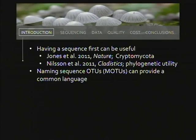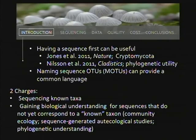Naming sequence OTUs — also in David Hibbett's lab group paper — suggested a couple of different protocols for naming environmental sequences, providing language to talk about them. So I would say we have two charges in a floristic project: one is sequencing the known taxa, and the other is gaining biological understanding for sequences that don't yet, or may never, correspond to a known taxon — learning community ecology, phylogenetics, and sequence-generated autecology just from the sequences themselves.